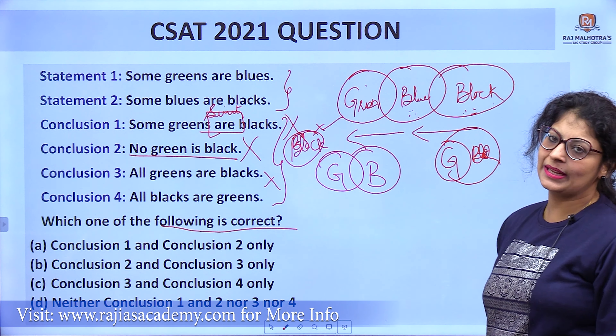Third conclusion: all green are black — that diagram is not visible, so again false. Fourth: all black are green — that is also not visible, so again false. All four conclusions are wrong. So in this case, the answer is: neither one, neither two, neither three, neither four. If there had been an 'either one or two' option, we would check the either pair, but we don't have that option here.